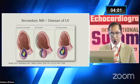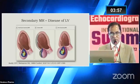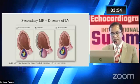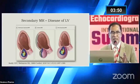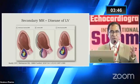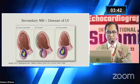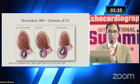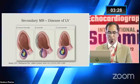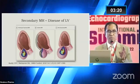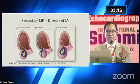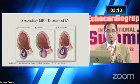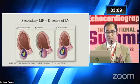Secondary MR is not uncommon and is rather a common entity nowadays. It is due to several mechanisms. If the left ventricle is dilated due to any cause, there may be MR despite a normal mitral valve apparatus due to loss of coaptation, as shown on the left side. In the middle example, part of the ventricle is infarcted, causing papillary muscle dysfunction and tethering of the leaflet leading to eccentric MR. On the right side, in long-standing atrial fibrillation, the left atrium may be so dilated that there is loss of coaptation of otherwise normal leaflets, resulting in MR.